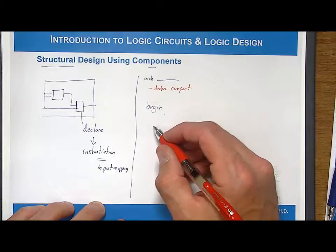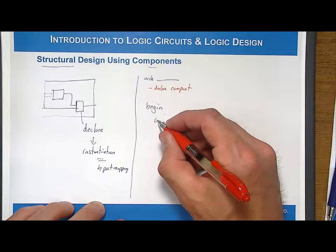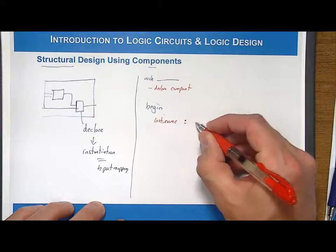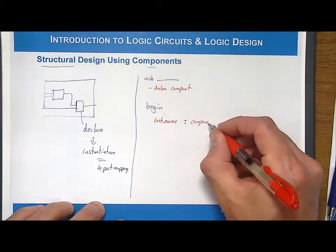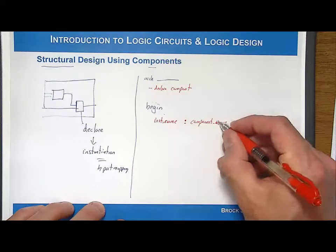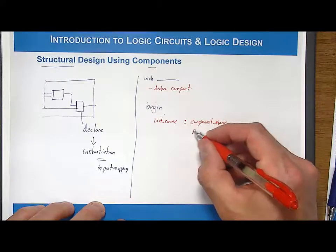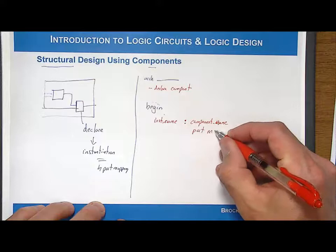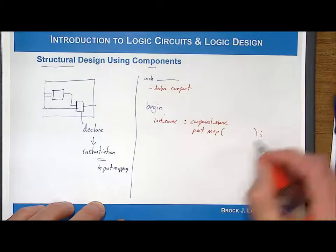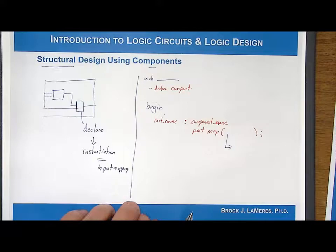What you do is you put an instance name. This is an instance name. And this is something that you make up. And then you put a colon, and then you put the component name. And the component name has to match exactly what was in the declaration. And then what you do is you do a keyword port map, and then you do the port connections. And then within this port connections, there's two ways to do the port mapping.